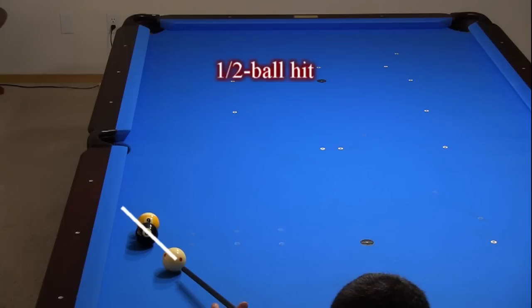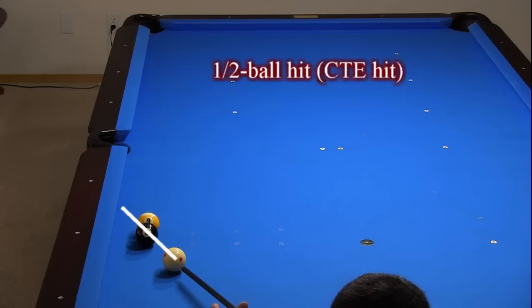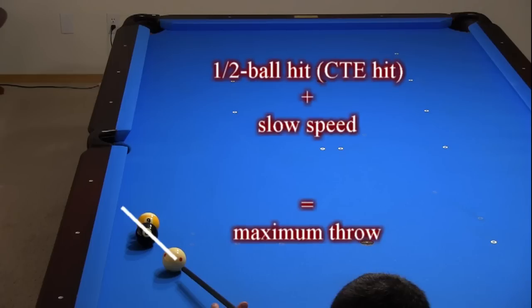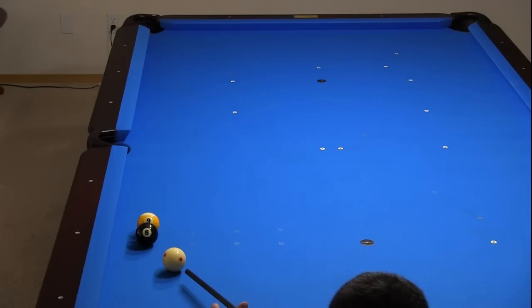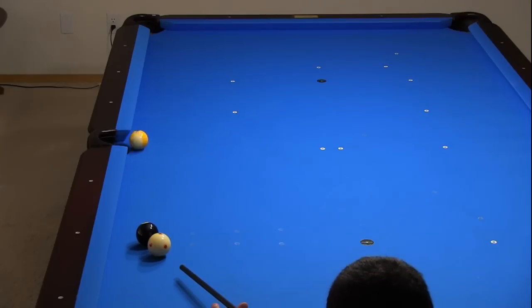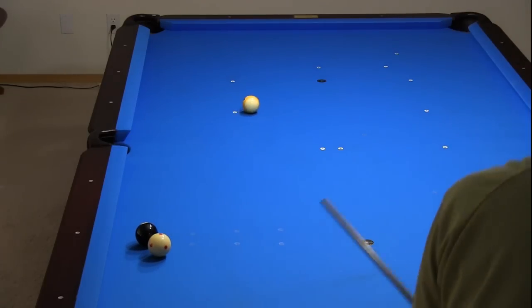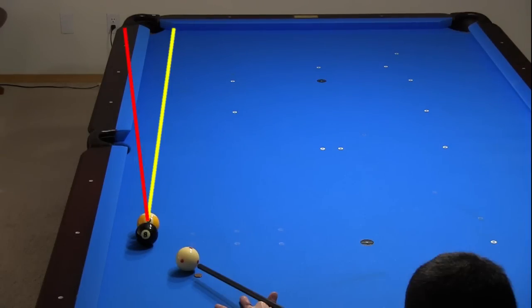At close to a half ball hit, where the center of the 8 is aimed at the edge of the 9 with slow speed, the amount of throw is maximum. Throw is largest with a stun shot, where the first ball slides without top or bottom spin into the second ball. Stun is guaranteed for this shot and all of the small gap combos in this video, since the first ball doesn't have distance or time to develop forward roll before hitting the second ball. Here's the shot again — look at how much it throws.